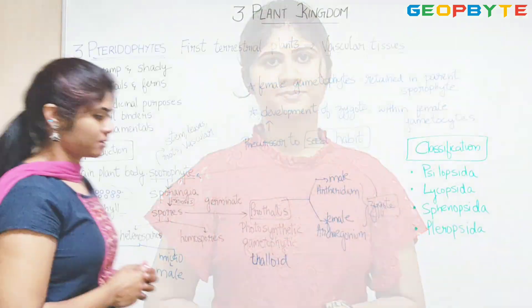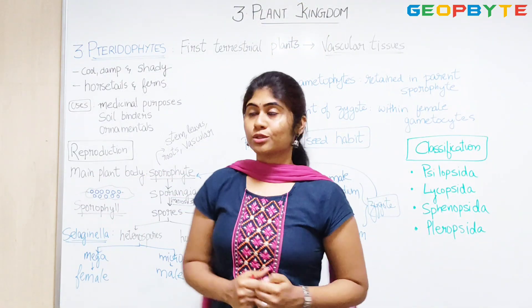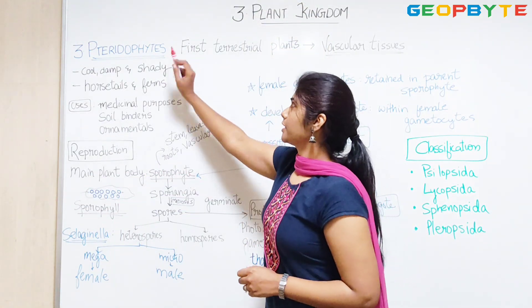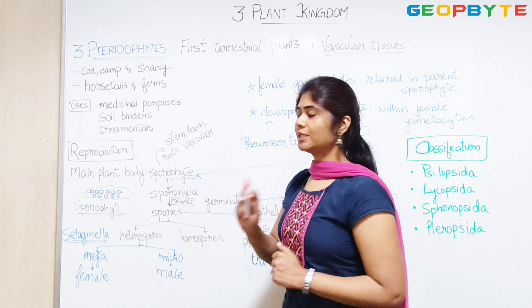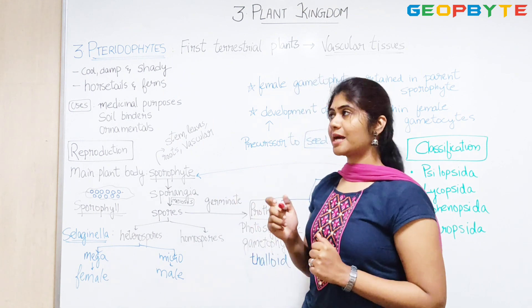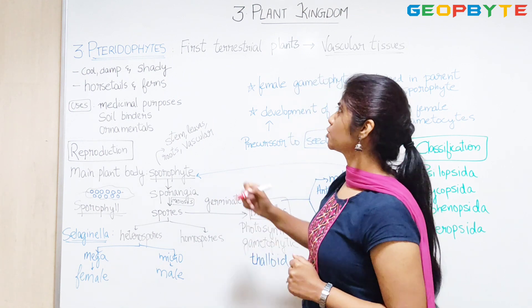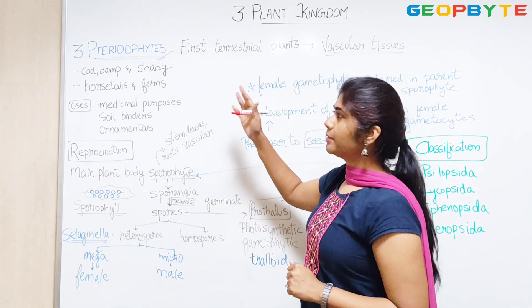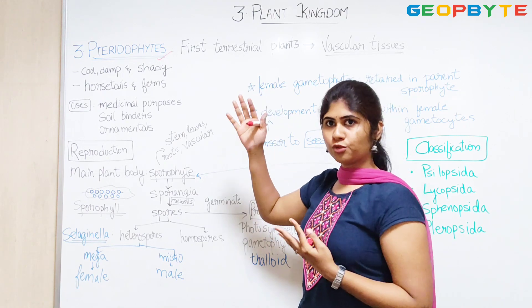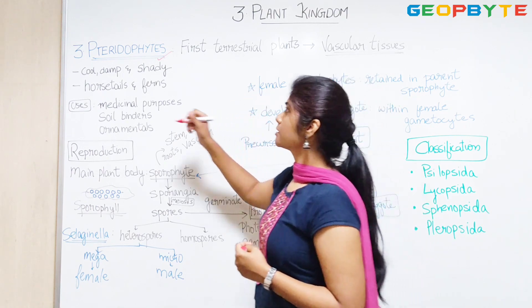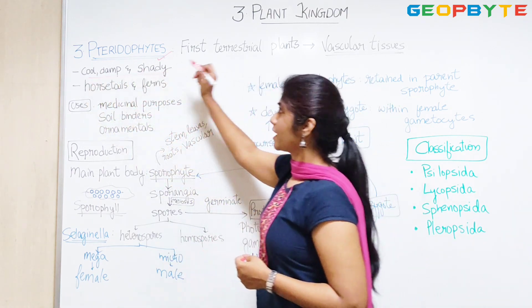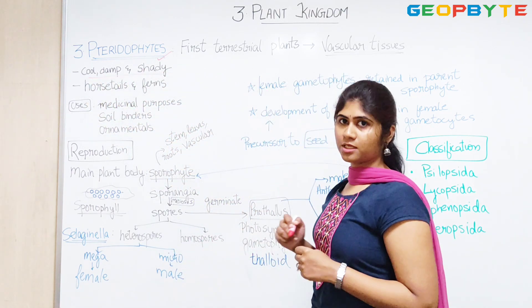Welcome to Geobite. This is the third topic: Pteridophytes. Let us see what are the characteristic features of Pteridophytes. The habitat of Pteridophytes is the cold, damp and shady place.